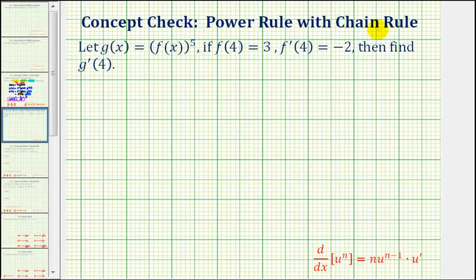The basic idea of the chain rule is to find the derivative of a composite function, we find the derivative of the outer function, and multiply by the derivative of the inner function.